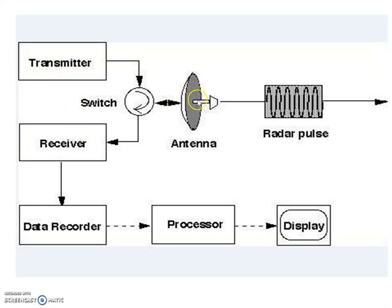Here, the antenna radiates the electromagnetic waves into space. When any object comes into the scanning area, the electromagnetic waves fall on that object and come back in the form of weak echoes. Those weak echoes are again received by the antenna. The receiver takes the weak echoes from the antenna and amplifies them into a strong signal. That strong signal is then passed through data recorders, and from the data recorders to a processing system, and we get the final output on the display unit.